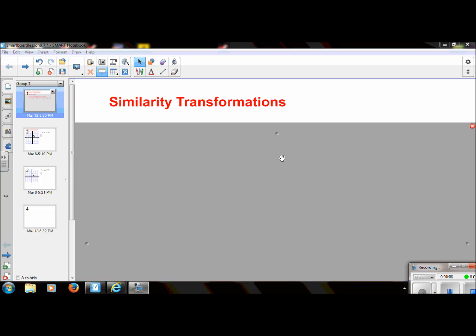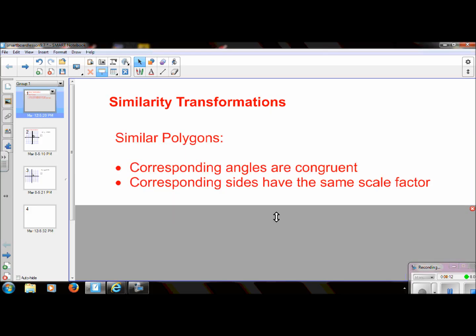Before we start, we need to take a step back and talk about the word similar. We've used this in previous chapters, but again, this is going to be an important word in this section. Similar polygons mean that all of the corresponding angles are congruent, but the corresponding sides have the same scale factor, or they're proportional, another way that we could say it.